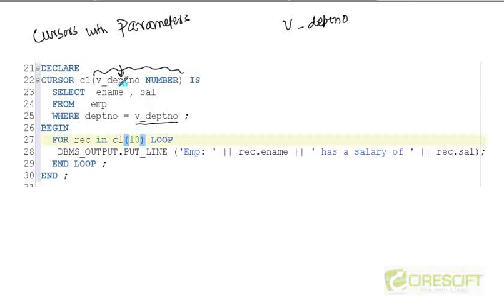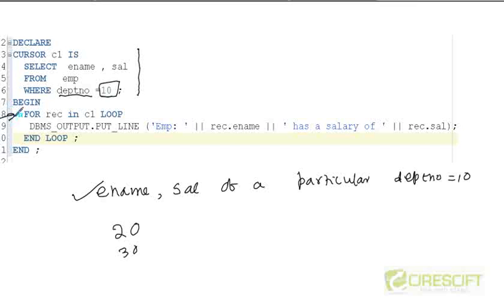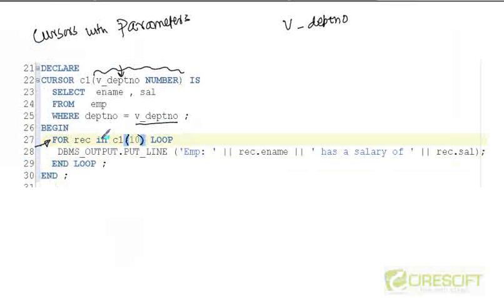So then what do you do? Here's the interesting thing — same code, cursor C1, but then I give the value of the parameter as 10 at runtime. That means this SELECT statement now becomes: SELECT ename, sal FROM emp WHERE department number is equal to 10. So we are executing the same query, but we make it a little more elegant — the code is sending a parameter, and tomorrow instead of 10 I can run 20, or 30, or 40. Even depending on some IF condition I can put an IF clause and execute this cursor on a particular department number.